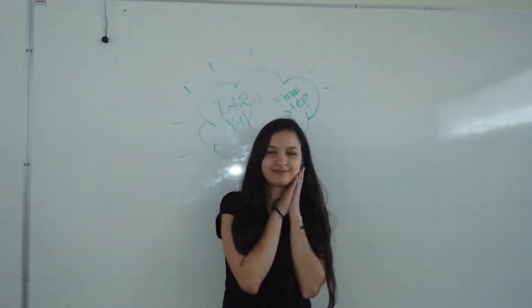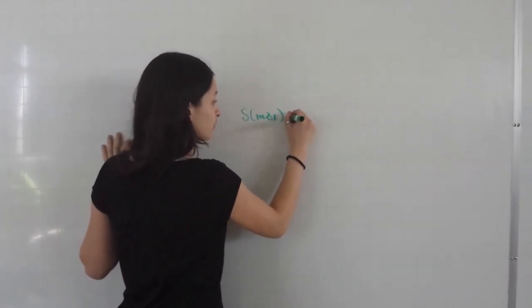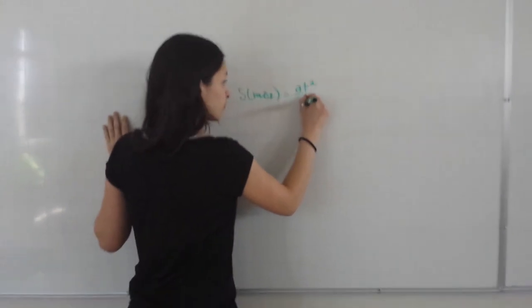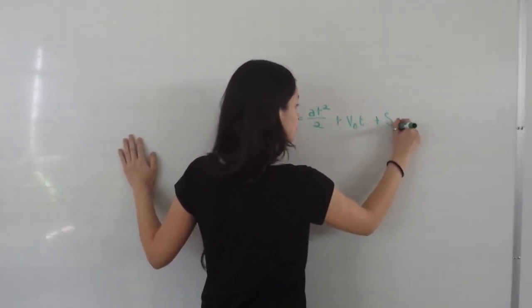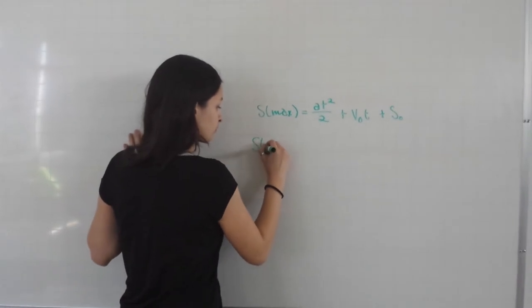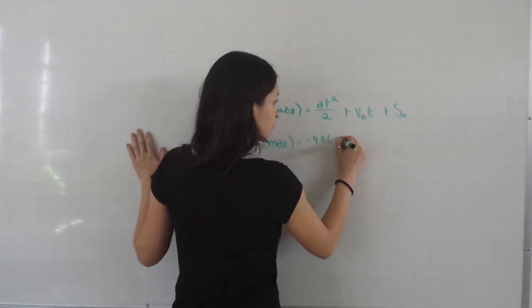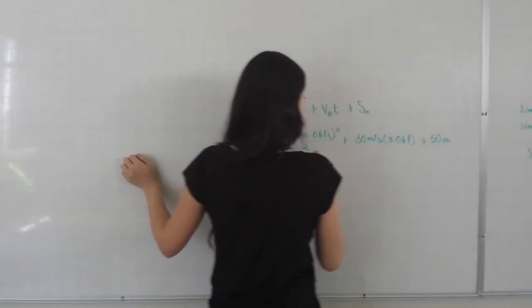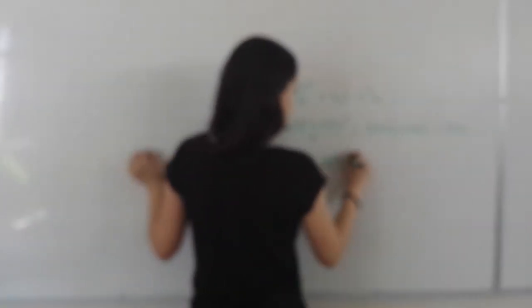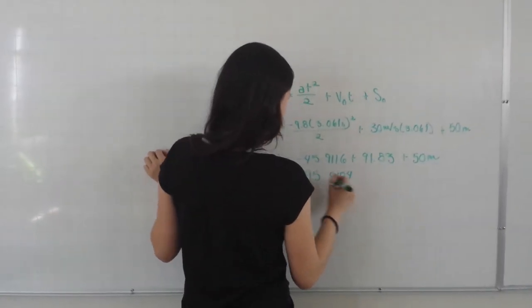Final step! Our final step is to substitute the values in the position function that we have got so we can obtain the maximum height. We know that the basic formula is at squared over 2 plus initial velocity times t plus initial position. So we substitute all the values, solve, and get an answer 95.9184 meters.